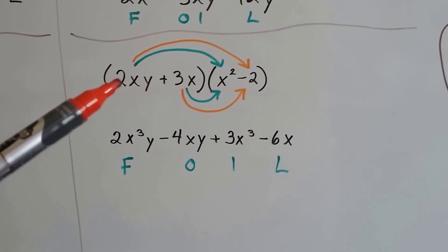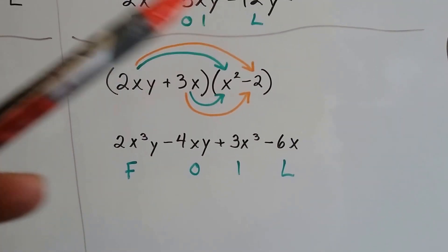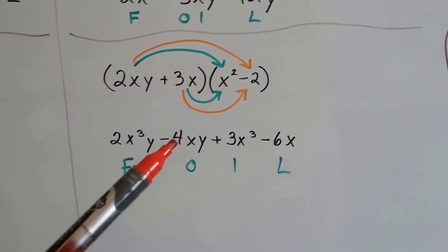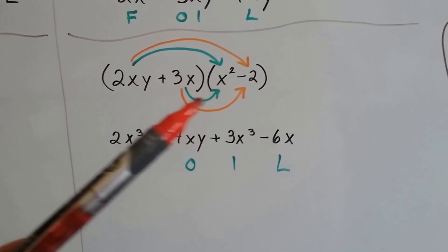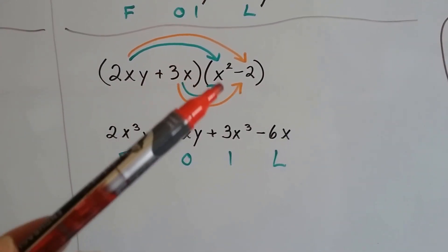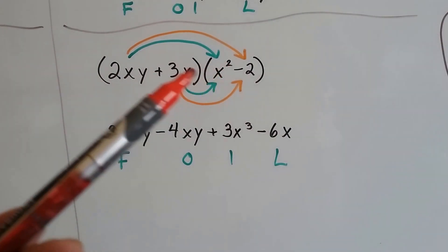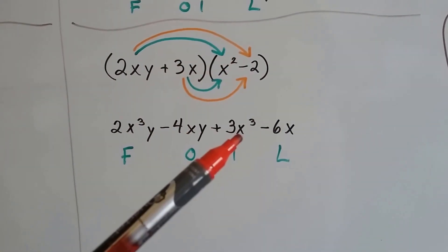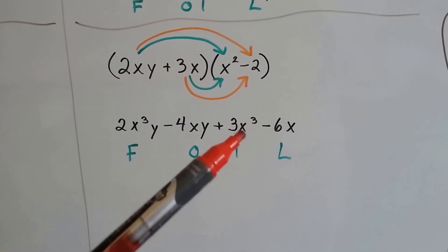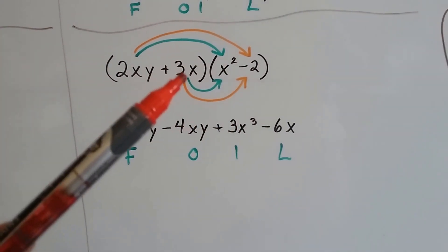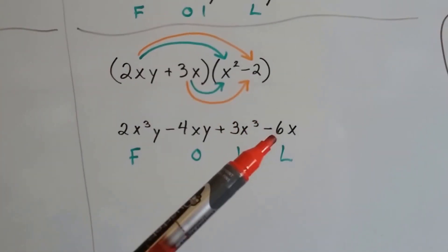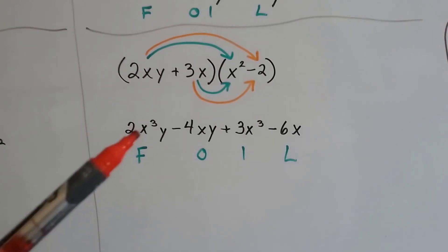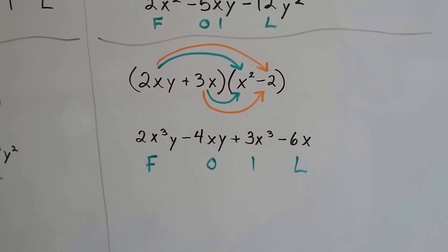Now we're going to multiply 2xy times a negative 2. That's going to give us a negative 4xy. Now we're going to do the inside ones. 3x times x squared. That gives us an x to the third power because we have a 1 plus a 2. So we have 3x to the third. And now we're going to do the last one. 3x times a negative 2 is negative 6x. First, outer, inner, last.